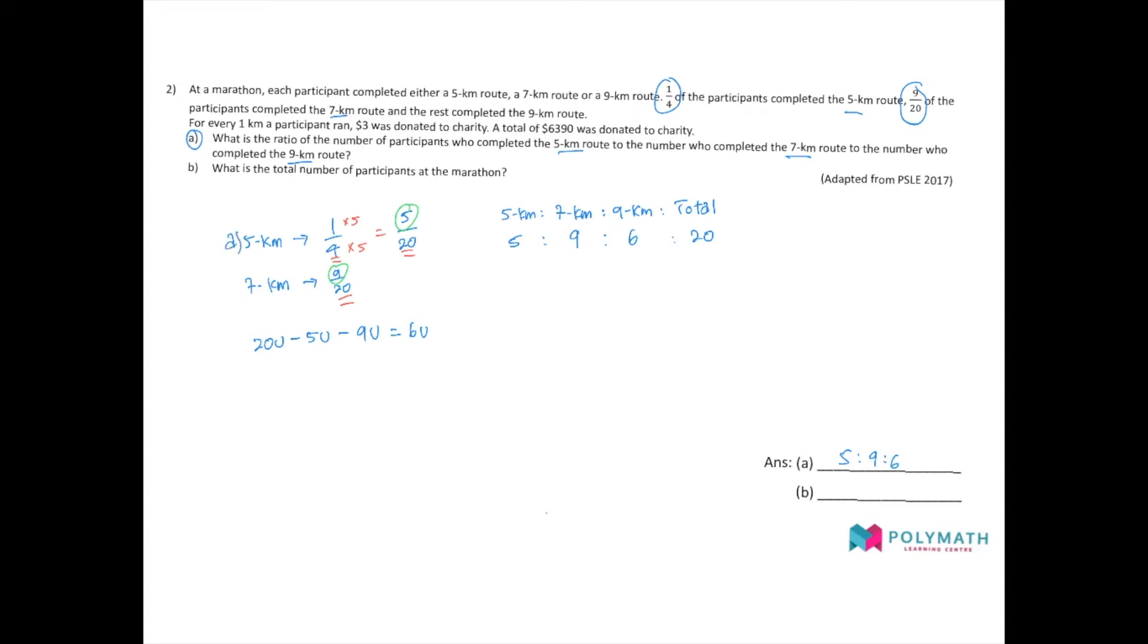Moving on to part B of the question. What is the total number of participants at the marathon? In order to find the total number of participants, we must first have a value that represents the participants or the distance. We are given a dollar value here instead. But there's no problem with converting this dollar value, 6,390, into the number of kilometers they ran in total. This is because for every kilometer the participants ran, you will receive $3 for charity. And the total amount collected for charity is $6,390. If you divide by the rate of $3 per kilometer, you'll find the number of kilometers. The number of kilometers ran is 2,130 kilometers.